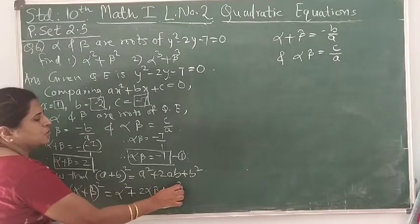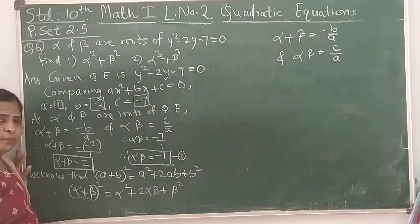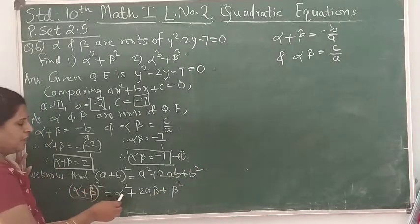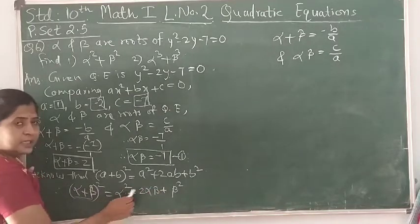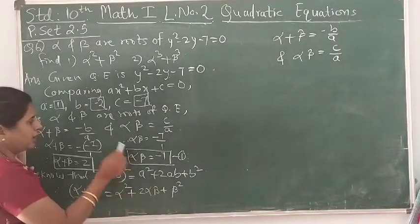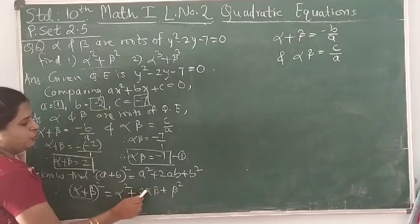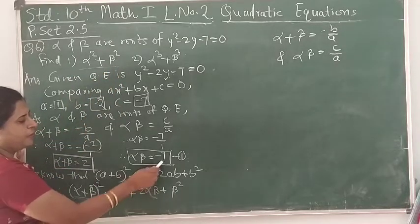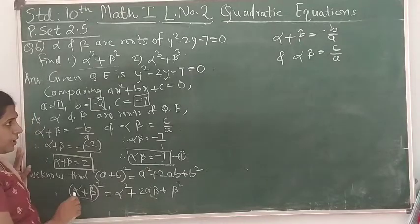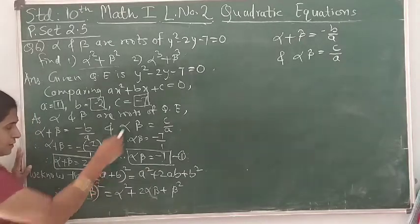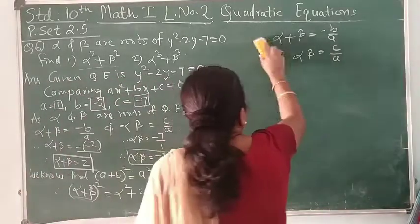Rearranging (α + β)² = α² + β² + 2αβ, we move 2αβ to the other side to get: α² + β² = (α + β)² - 2αβ. We can derive this identity step by step.